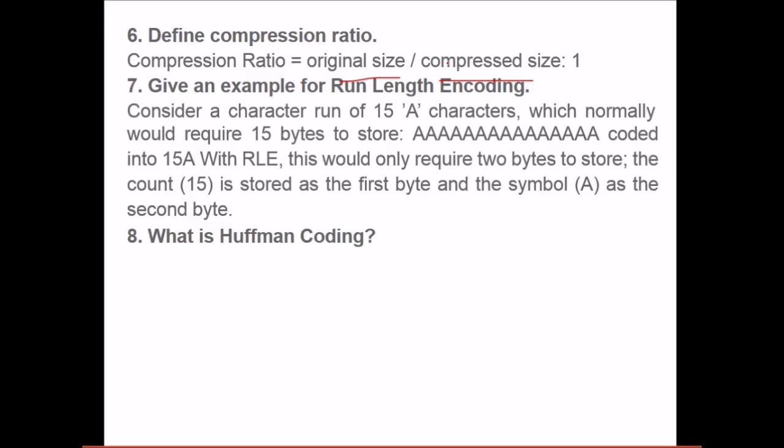Give an example of run length encoding. Let us see a simple example. Consider character run of 15 A's character, which normally would require 15 bytes. If we code it with 15 and A's - this is the symbol and the count of A's present here - with RLE this would only require 2 bytes to store. The count 15 is stored in the first byte and A is stored in another byte. So you see there is a compression. We have achieved this saving of 15 minus 2, that is 13 bytes we have saved. This may be used for any other purpose.